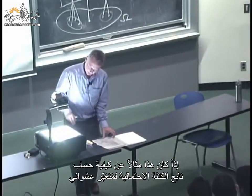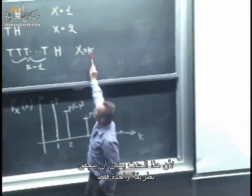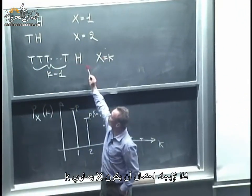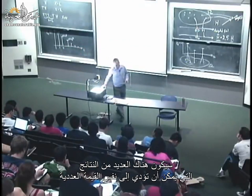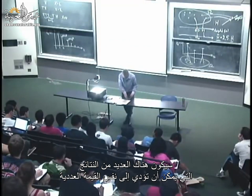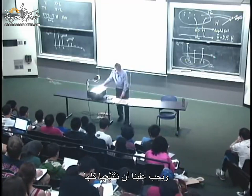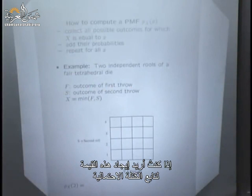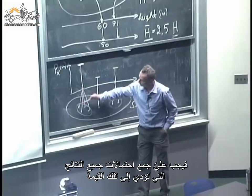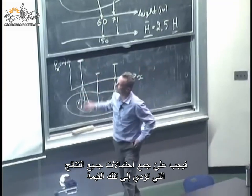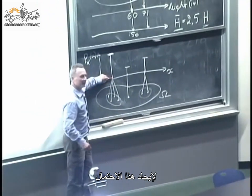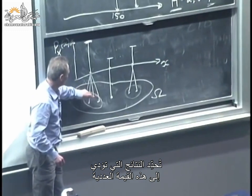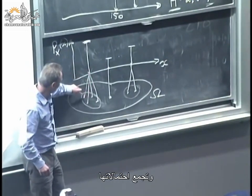This was an easy example because the event X equals k can be realized in one and only one way. More generally, there will be many outcomes that lead to the same numerical value, and we need to keep track of all of them. The general procedure is to identify which outcomes lead to a particular numerical value and add their probabilities.